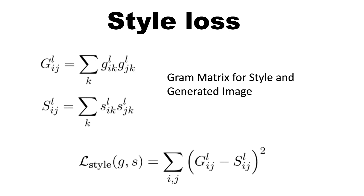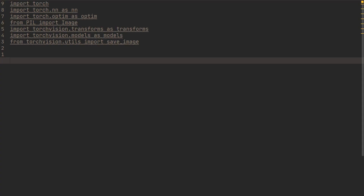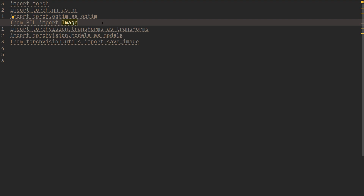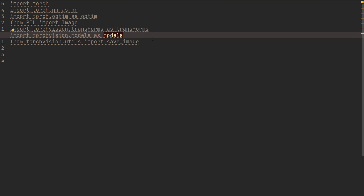This was a quick recap — it's going to be a lot clearer when we start coding. So let's get started. I've copied in the imports: we have torch and optim, then from PIL import Image to load the images, transforms so we can convert images to tensors, models to load VGG19, and save_image to store the generated image at the end.